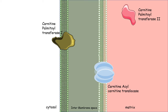The carnitine shuttle system is comprised of two major enzyme components: carnitine palmitoyl transferase 1 (CPT1) and carnitine palmitoyl transferase 2 (CPT2). The third component is a translocase complex, whose function we will learn in a moment. Carnitine itself is a carrier molecule central to this system.